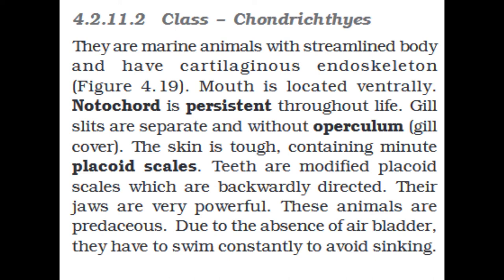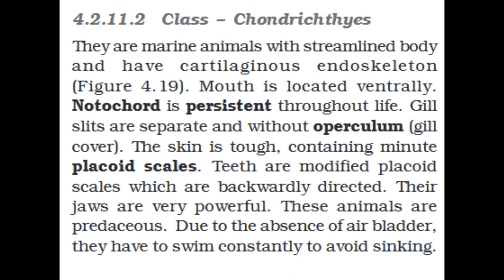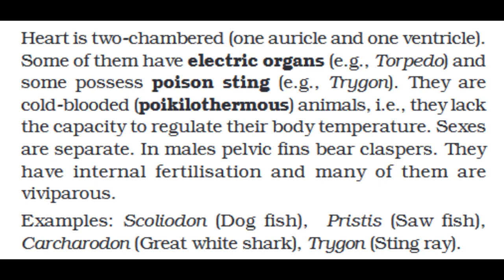Section 4.2.11.2: Class Chondrichthyes. These are marine animals with a streamlined body and a cartilaginous skeleton. The mouth is located ventrally. The notochord is persistent throughout life. Gill slits are separate and without an operculum (gill cover). The skin is tough, containing many placoid scales. Teeth are modified placoid scales that are backwardly directed. Their jaws are very powerful and these animals are predaceous. Due to the absence of an air bladder, they have to swim constantly to avoid sinking. The heart is two-chambered (one auricle and one ventricle). Some have electric organs (e.g., Torpedo) and some possess poison stings (e.g., Trygon). They are cold-blooded (poikilothermic) animals. Sexes are separate; in males pelvic fins bear claspers. They have internal fertilization and many are viviparous. Examples: Scoliodon (dogfish), Pristis (sawfish), Carcharodon (great white shark), Trygon (stingray).